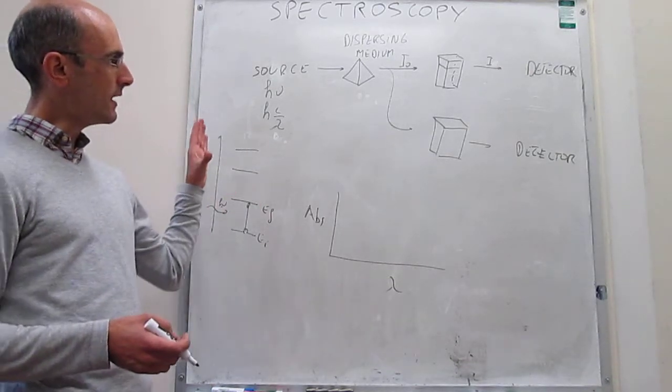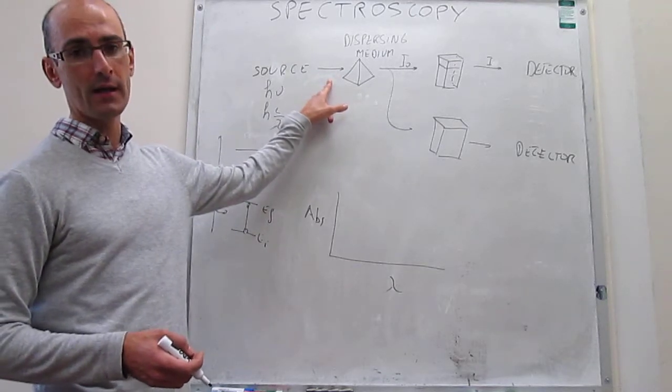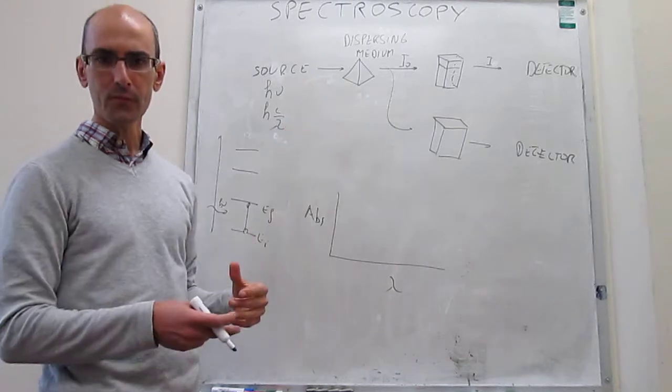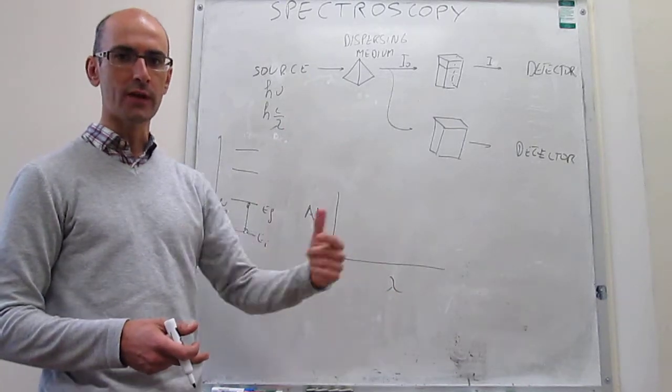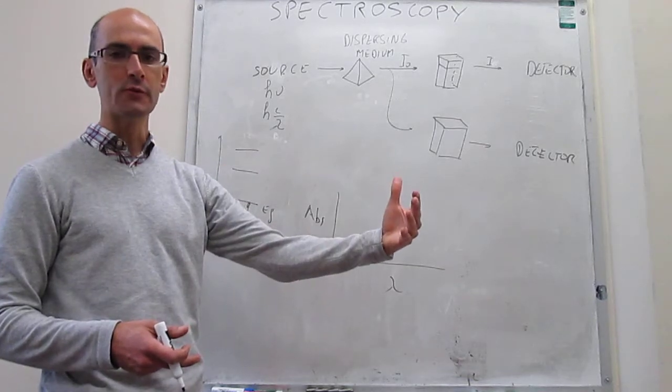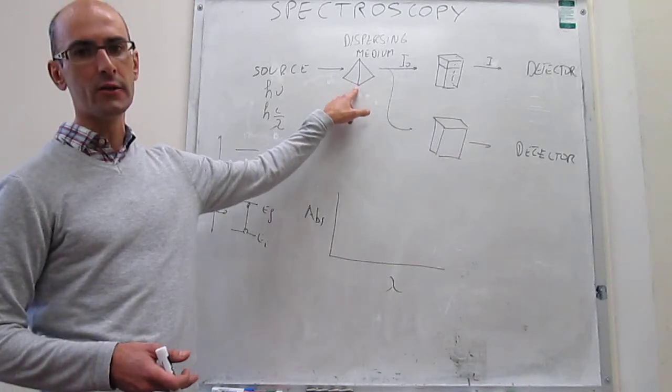But again, the problem is that when you use those polychromatic sources of radiation, you get all of the photons at the same time. The question is, how do you analyze what absorption has been produced by what photons?